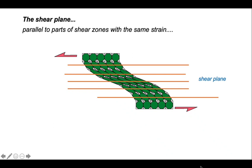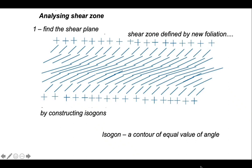In practice, then, how do we get that? So let's go stepwise through the analysis of the shear zone. Stage one, find the shear plane. And we're looking at a shear zone defined by new foliation. We're going to construct isogons on this new foliation. An isogon is simply a contour of equal value of angle.